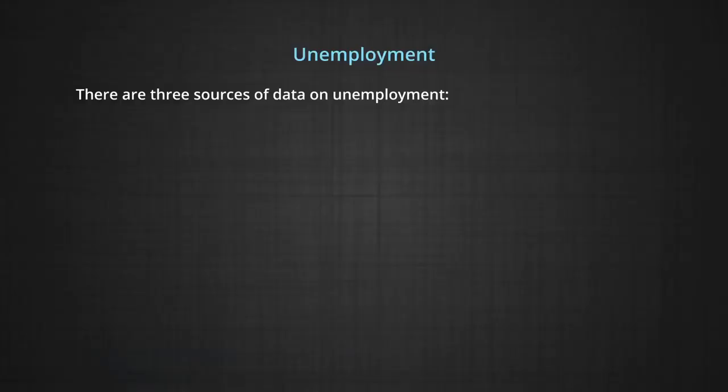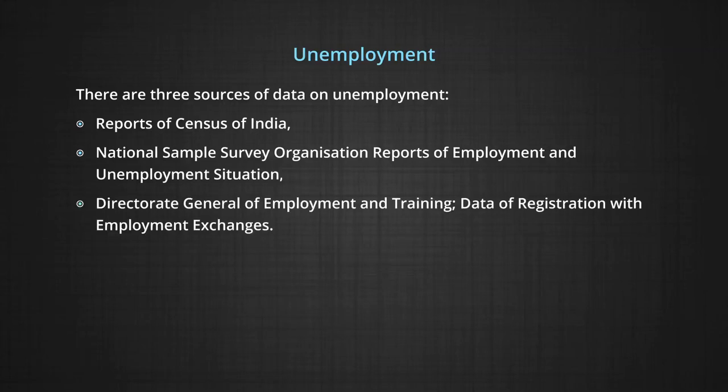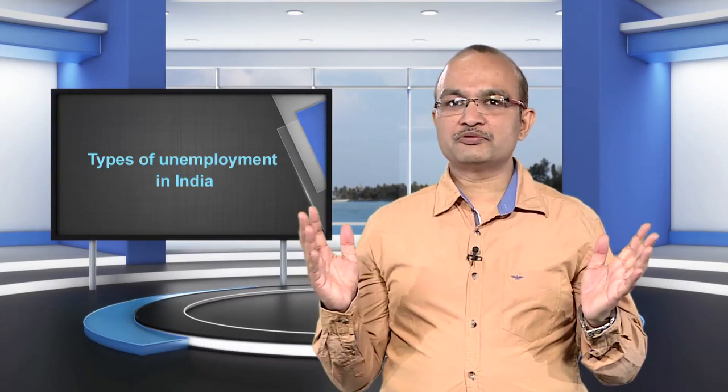There are three sources of data on unemployment: one, reports of the Census of India; two, NSSO reports on employment and unemployment situations; and three, the Director General of Employment and Training data from registration with employment exchanges. Though they provide different estimates of unemployment, they do provide attributes of unemployment in general and the variety of unemployment prevailing in our country. Now we come to the types of unemployment in India — different types exist as described here.